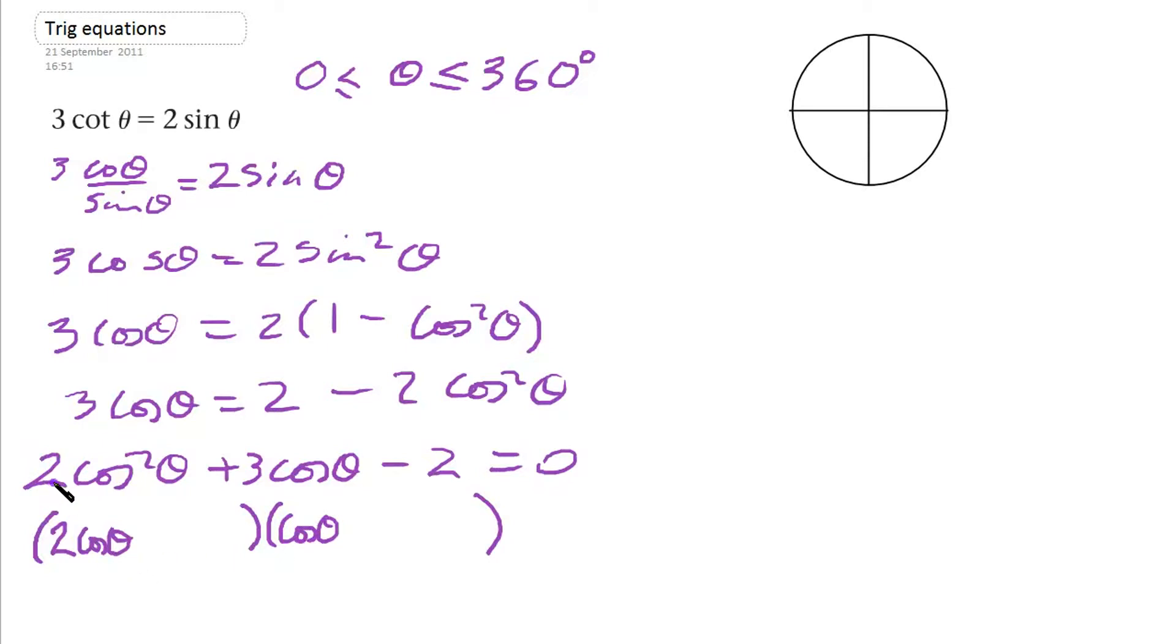We've got to have these two multiply together to give us 2 cos squared theta. Now we're going to have minus 1 and 2. Well we want to get 3, so the 2 times the 2 will give us 4, and we put minus 1, minus 1 times cos will make it 3. So we see we've got that.